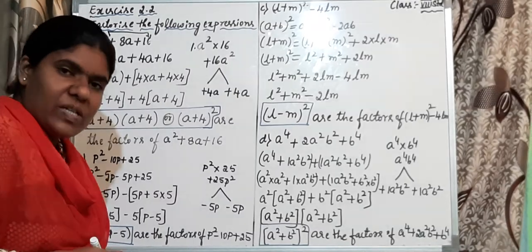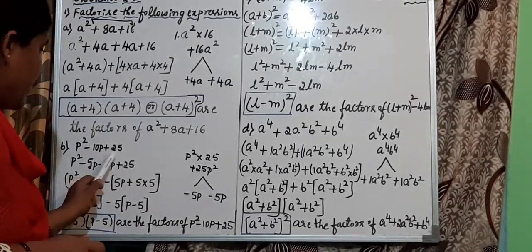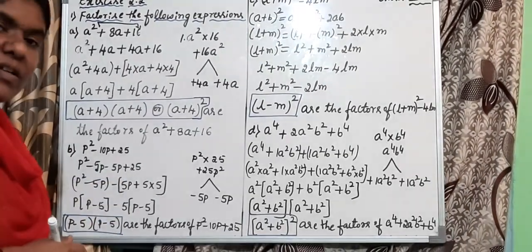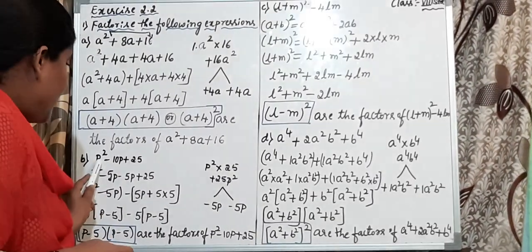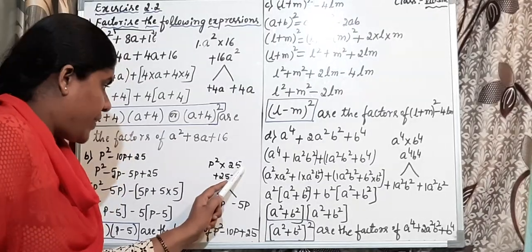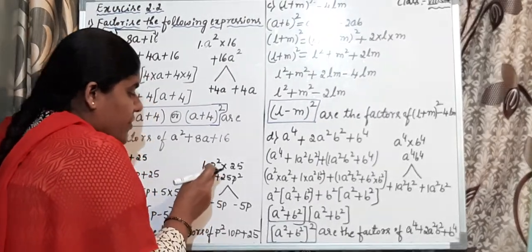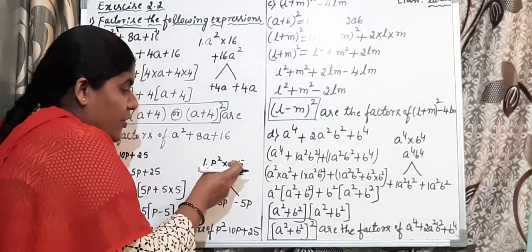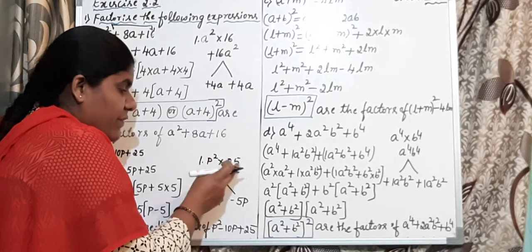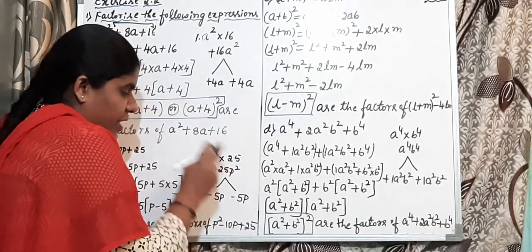Same method — another example. The second question is: p² minus 10p plus 25. Step 1: multiply first term into third term, that is p² into 25. The coefficient of p² is 1, so 25 into 1 is 25. The two numbers both contain a positive sign; plus into plus is plus, giving 25p².